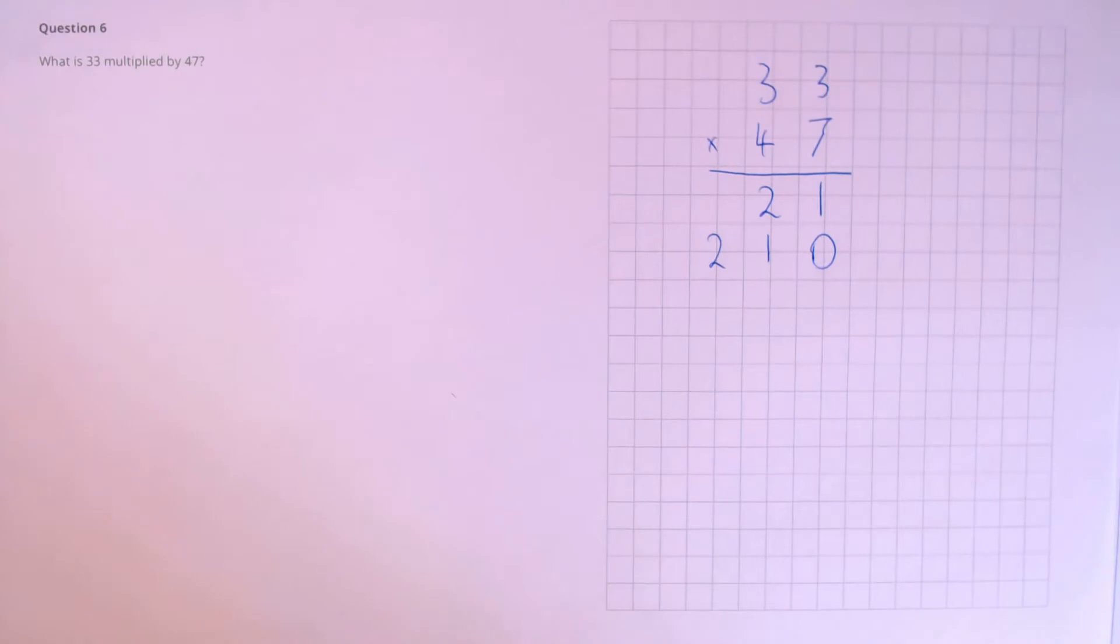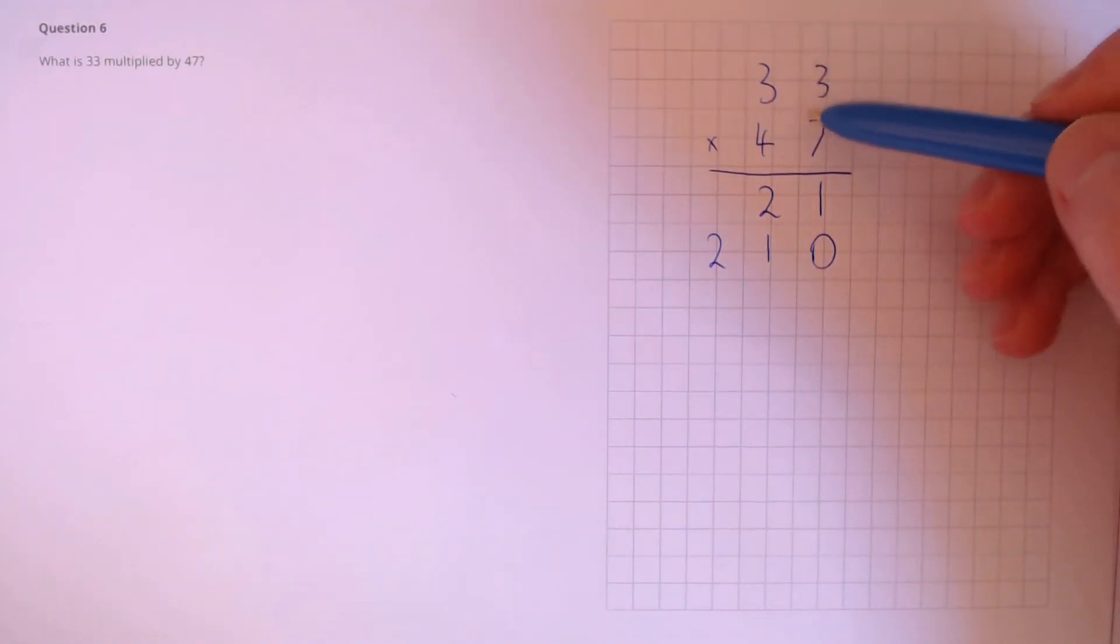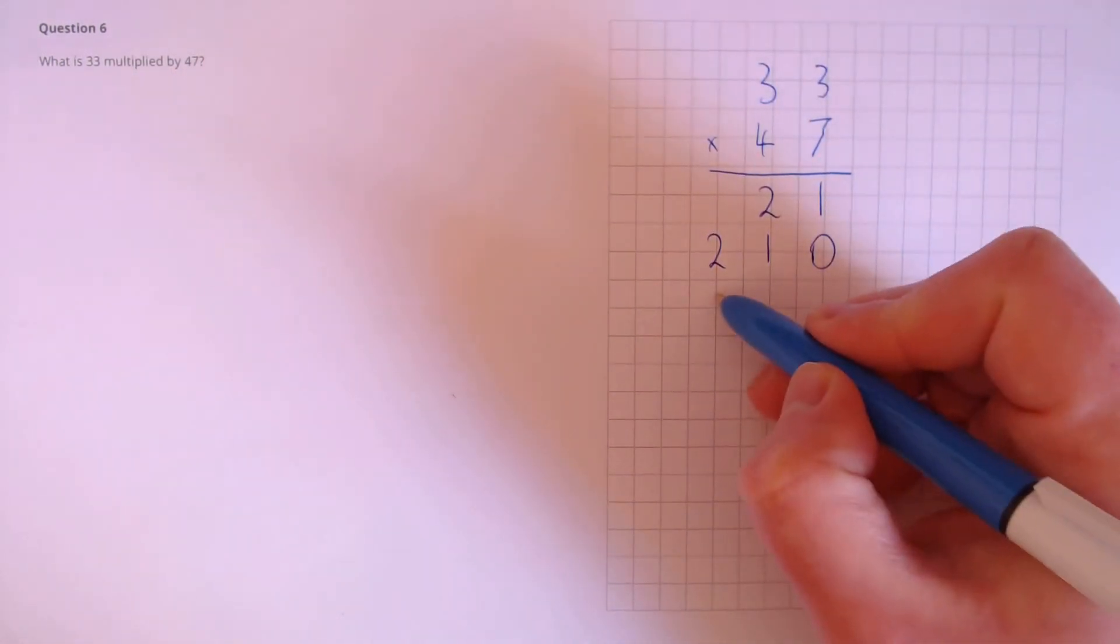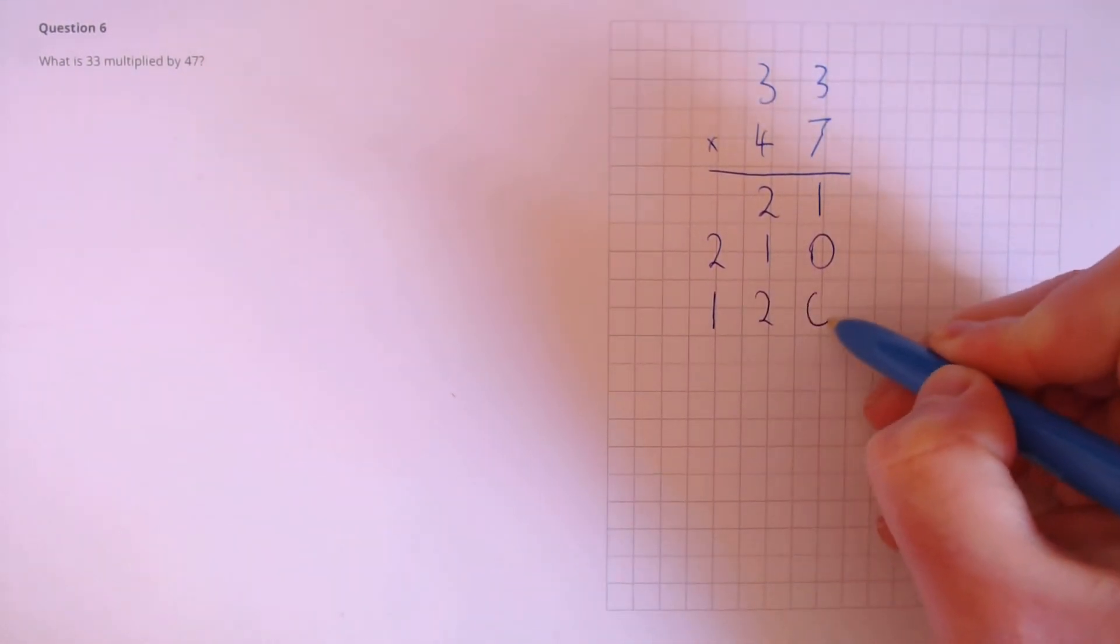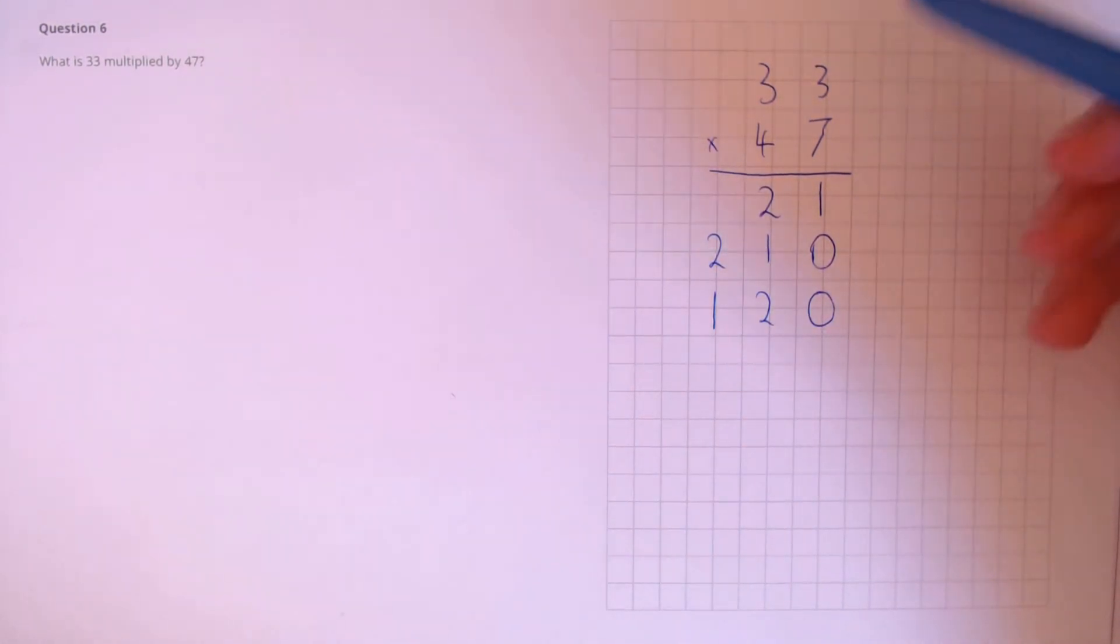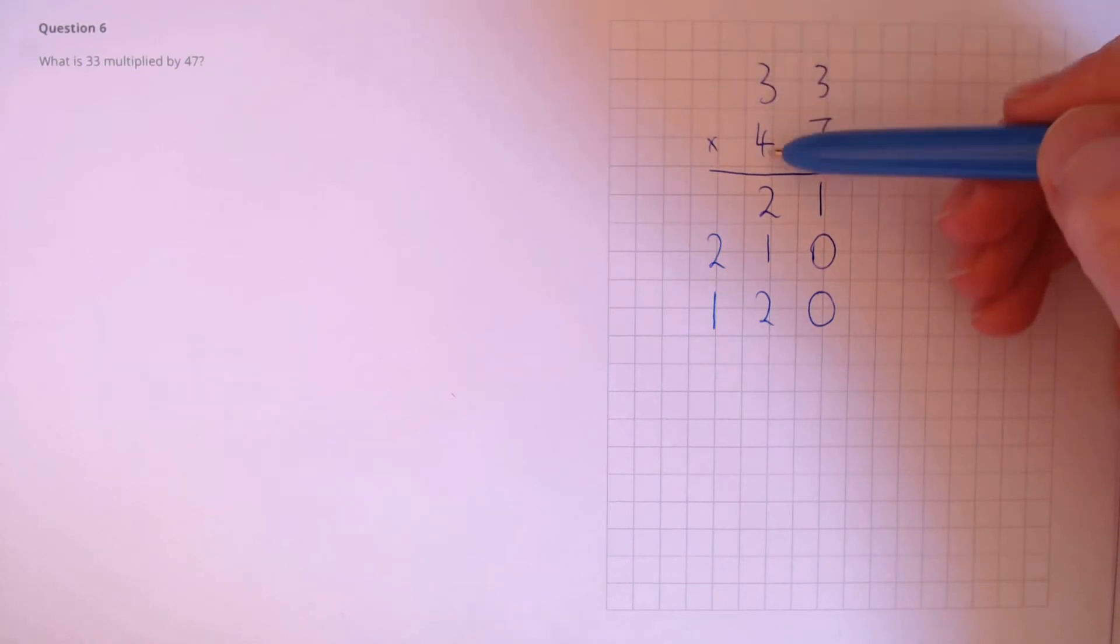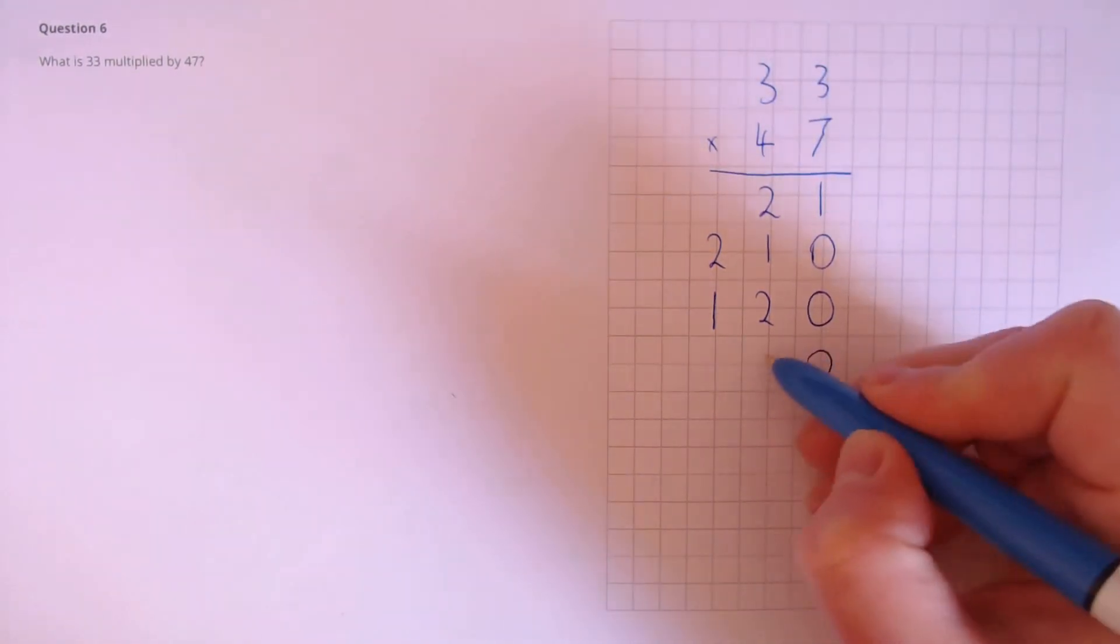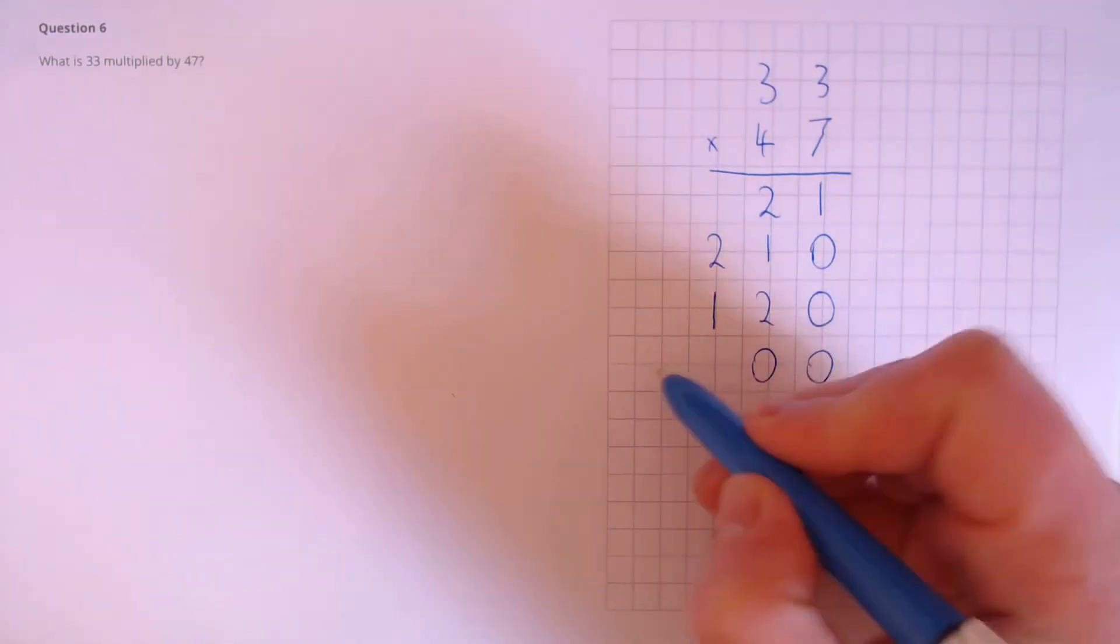Next, let's do the same for the units column here, multiplied by the tens column here. So, 3 times 4, that's 12. And because we've got a tens column, there's an extra 0. Next, we're going to multiply two tens columns. So, that's 30 times 40. Because we've got two tens columns now, we've put in two zeros. 3 times 4 is 12.